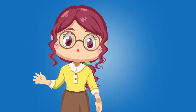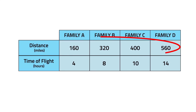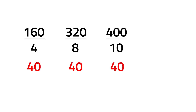So how do we do that? Let's divide the distance by its corresponding time of flight. 160 divided by 4 is 40. 320 divided by 8 is also 40. 400 divided by 10 is also 40. And lastly, 560 divided by 14 is also 40.